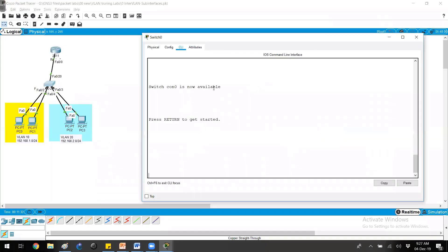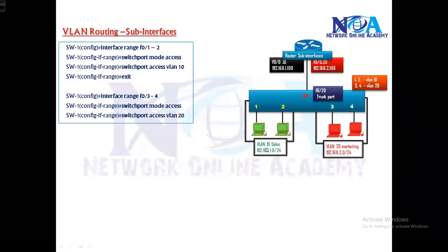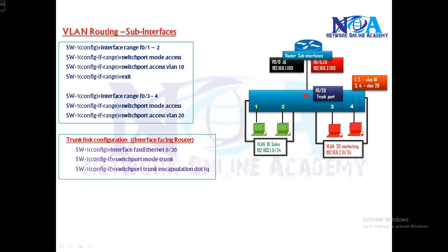If I verify my switch configurations here, I already did that so I don't need to do it again. We did enough labs previously on VLANs, so no need to explain these commands or configure them again. It's already pre-configured. The second step is we need to configure the link facing towards the router as a trunk port. The switch side trunk will be configured here. Go to port number 20 and then say switchport mode trunk.